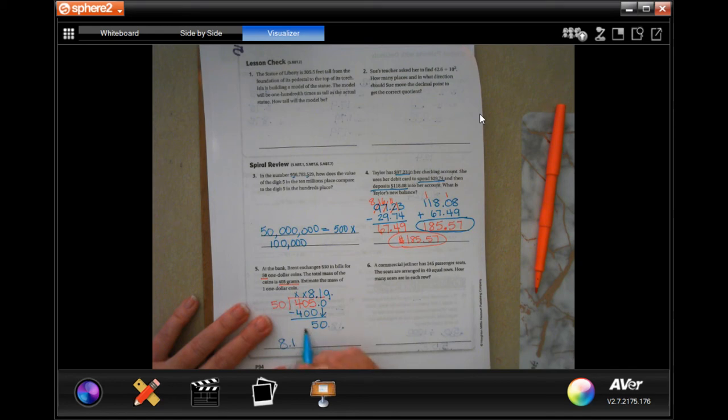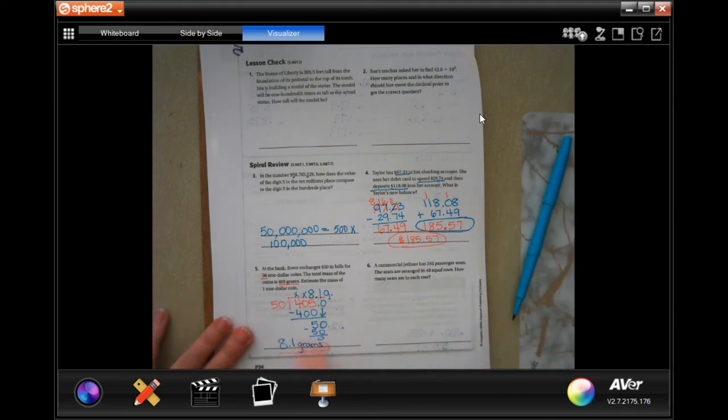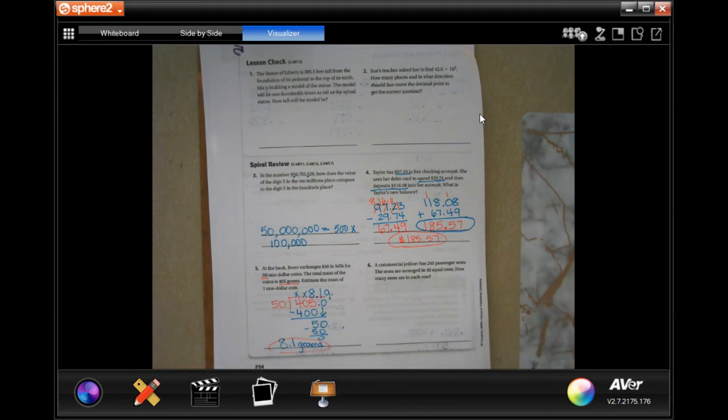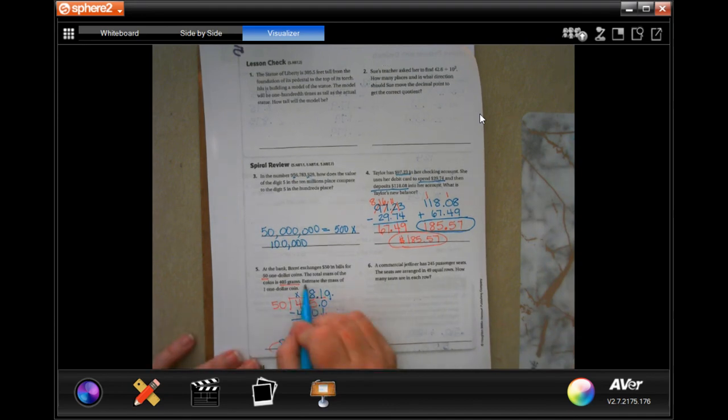So, that's in grams. It's going to be 8.1 grams. 8.1, oh, let me finish this out for y'all. Gram. There you go. It says to estimate, so you can just put 8 grams. Or about 8 grams.